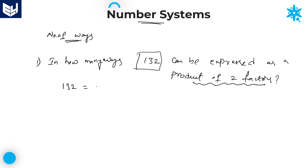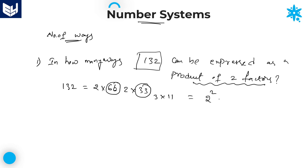132 can be expressed as a product of prime factors. We can write this number as: 132 is divisible by 2 — 2 into 66. 66 is not a prime number. Again divisible by 2 — 2 into 33. Again it is divisible by 3 — 3 into 11. Now if you observe: 2, 2, 3, 11 — all these are prime numbers. We can write 132 as 2² × 3¹ × 11¹. First step is completed.